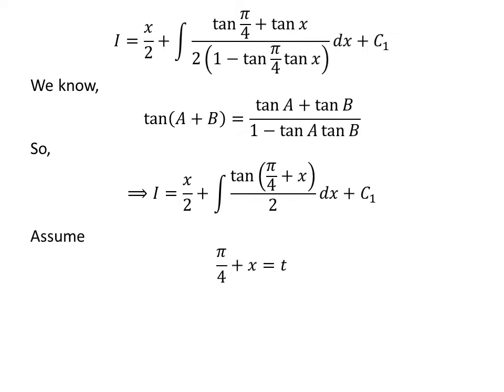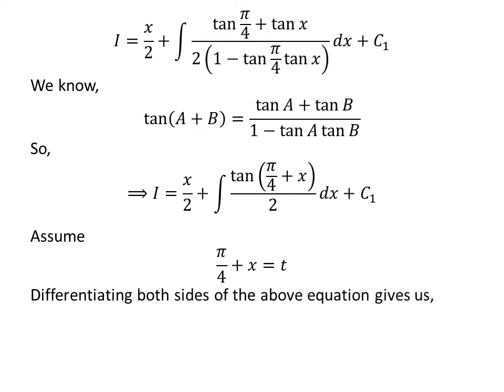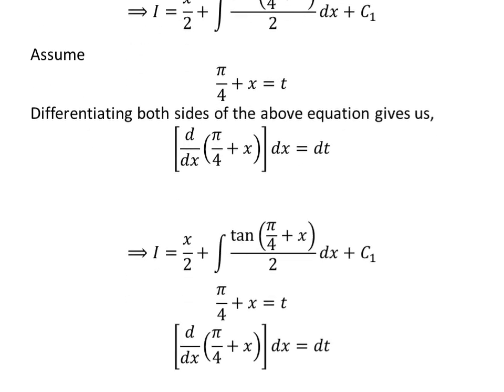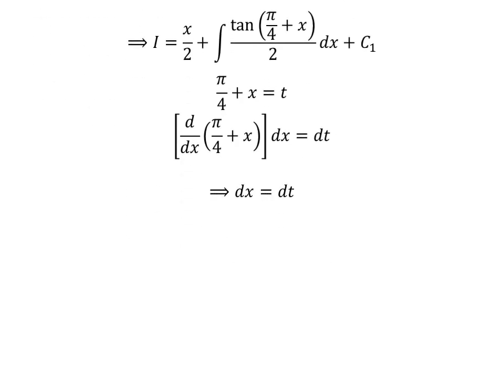Let us apply the substitution method to solve the integral of tangent of pi upon 4 plus x upon 2 with respect to x. Assume pi upon 4 plus x is equal to t. Taking the differential of both sides, as the derivative of constant pi upon 4 is 0 and derivative of x is 1, we get differential of x is equal to differential of t.